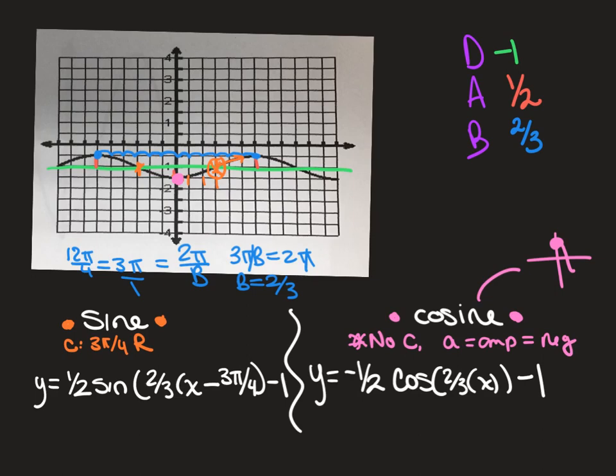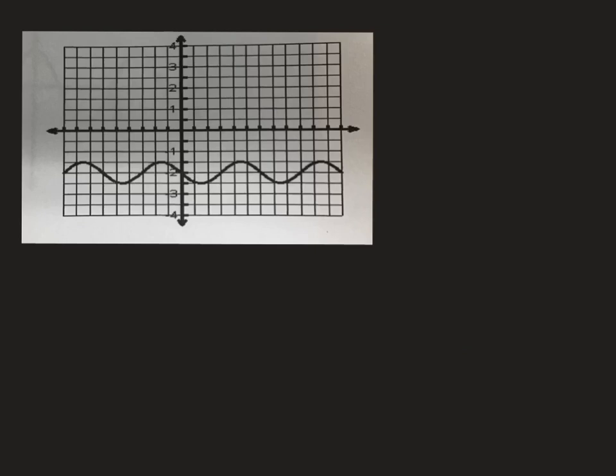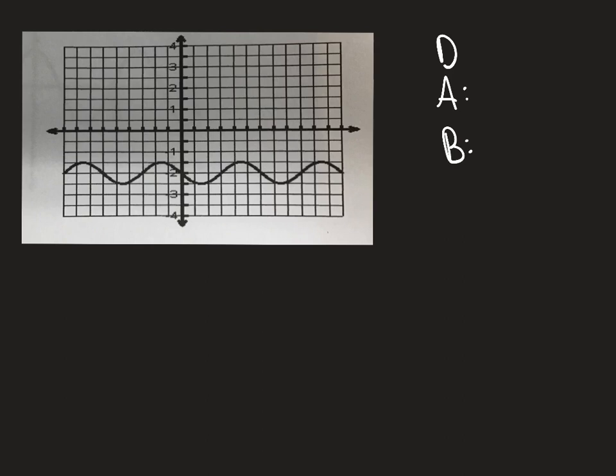Okay, we're going to do one more example. Okay, so the last example. So again, we're going to DAB first. So for my D, it's that line that cuts the graph in half horizontally, which for us was negative 2. My amplitude is how high or low you go from that. So remember this graph, the scale is by half, so it's a half.